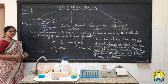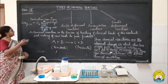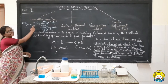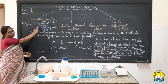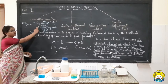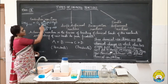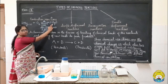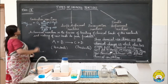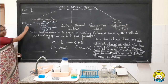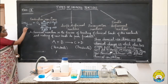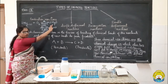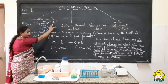What happened in the last activity is this: magnesium metal strip was getting burned in the presence of oxygen present all around us with a dazzling white light to produce white powder of magnesium oxide. Magnesium metal is an element, oxygen is an element, whereas magnesium oxide is a compound.